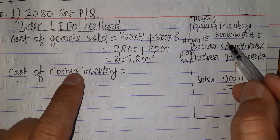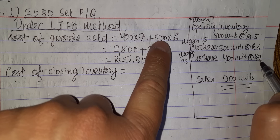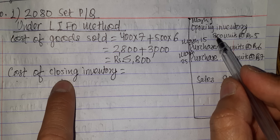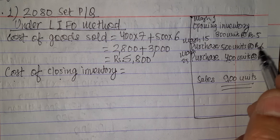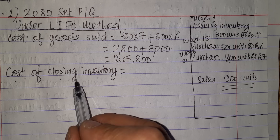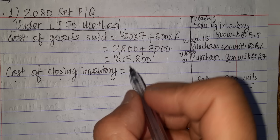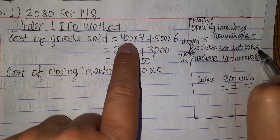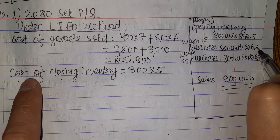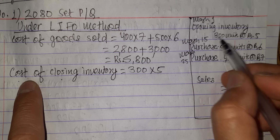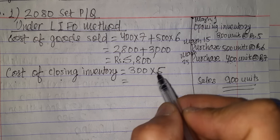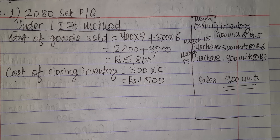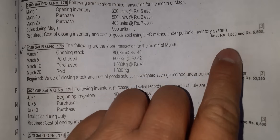For the closing inventory under LIFO, since the last-in items were sold first (March 25 and March 15 purchases), the remaining closing inventory comes from the opening stock: 300 units at Rs. 5, which equals Rs. 1,500.